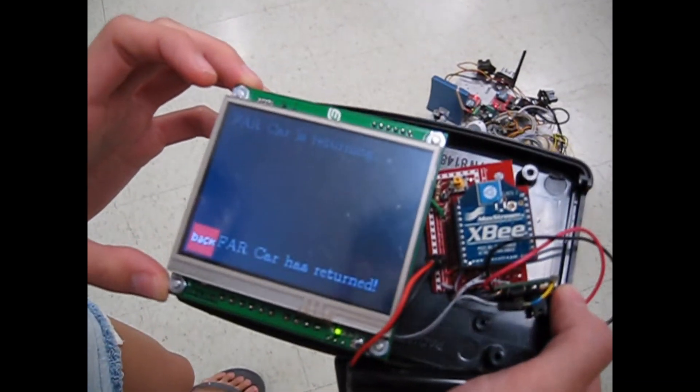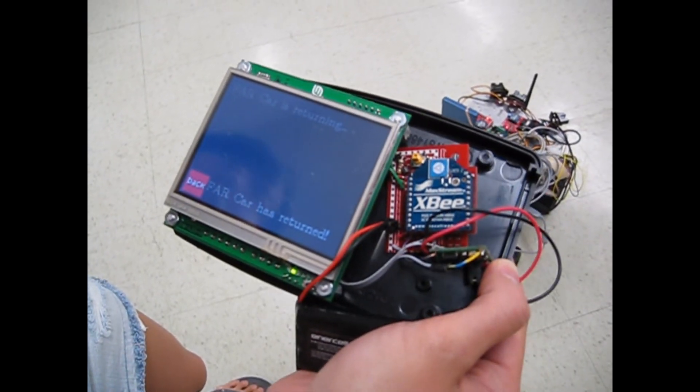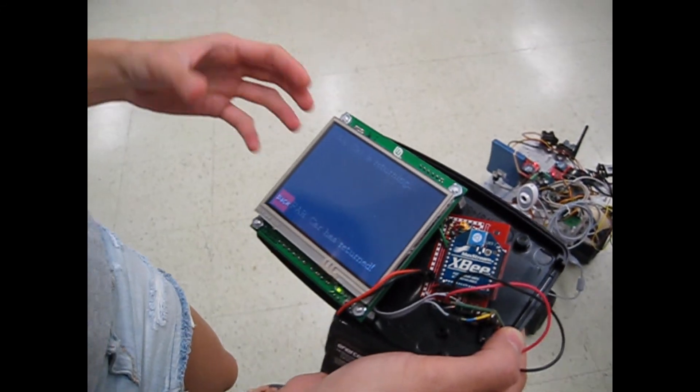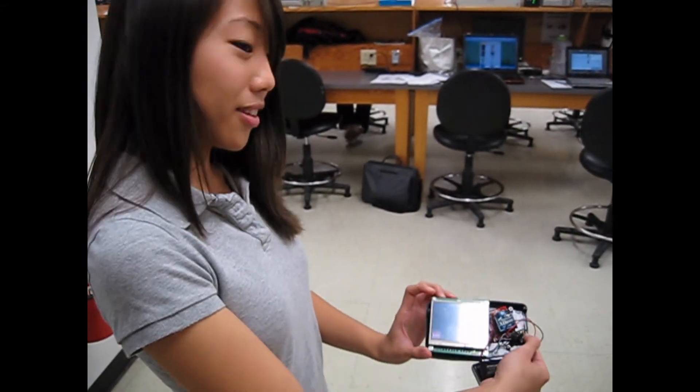Okay, so now it's detected that it is close enough to the controller based on the strong signal that's gotten from the controller Zigbee. And the controller will tell you that the FAR car has returned.